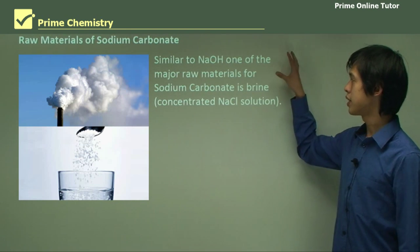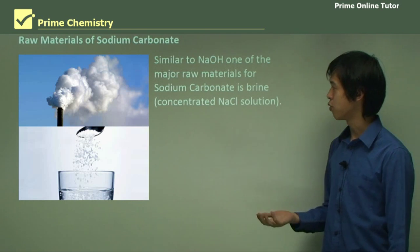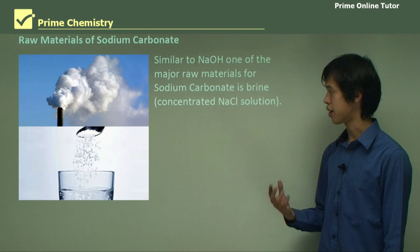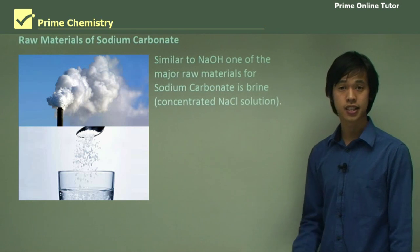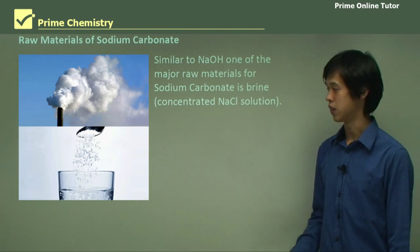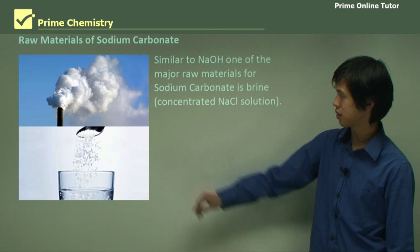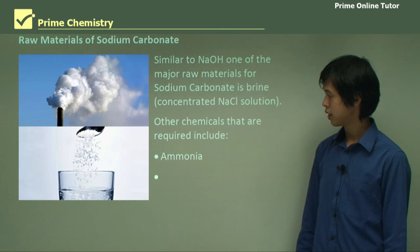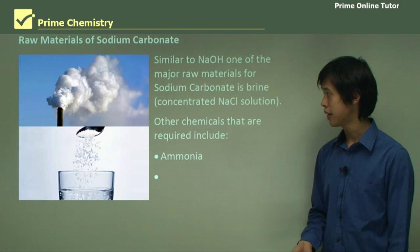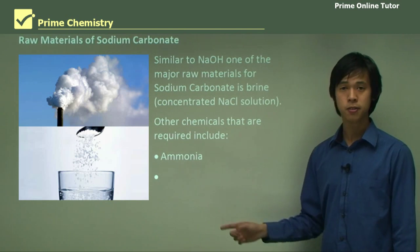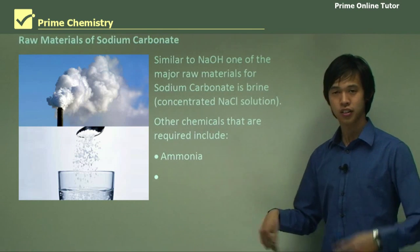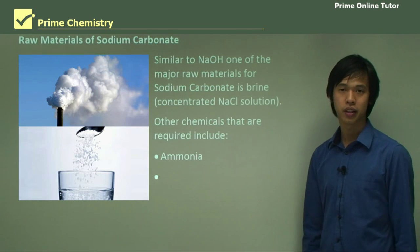Similar to NaOH, one of the major raw materials for sodium carbonate is brine — concentrated NaCl solution, just a concentrated salt solution. Another chemical required for the production of sodium carbonate is ammonia. Remember the Haber process — ammonia should jog your memory about the Haber process.